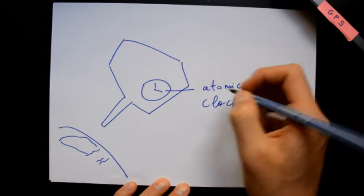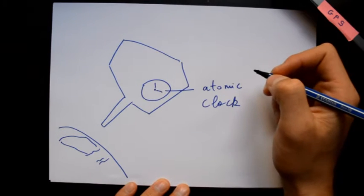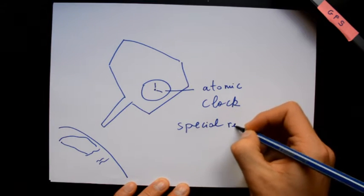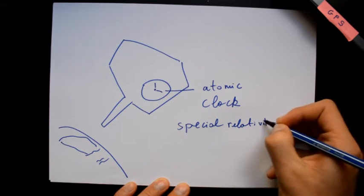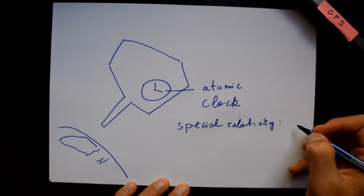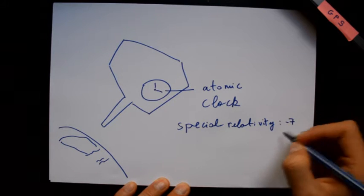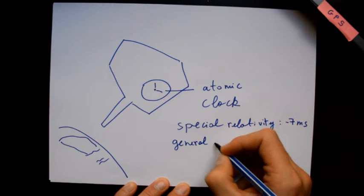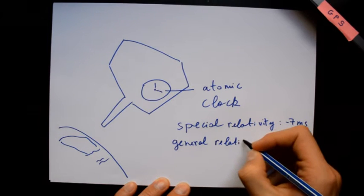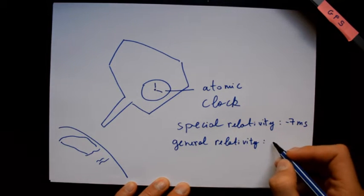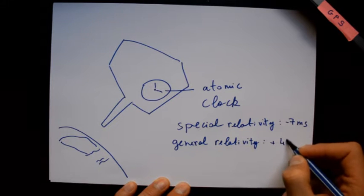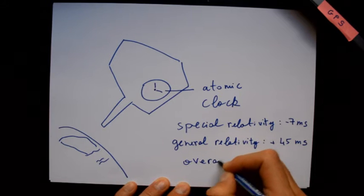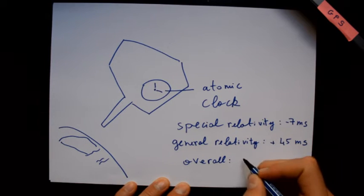Two types of relativity affect the GPS synchronization. Special relativity makes clocks run 7 microseconds slower every day, and general relativity makes clocks run 45 microseconds faster every day. So overall, every day, clocks run 38 microseconds faster.